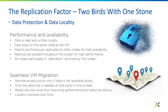A benefit of this protection is a thing called seamless VM migration. Your virtual machines can seamlessly migrate to any node within that cluster. That could happen through virtual machine load balancing, or through some sort of disaster — a host crashes, or a disk in a host crashes — making a virtual machine migrate to another node. That virtual machine will then continue to write locally on the new node, because we always read and write locally.